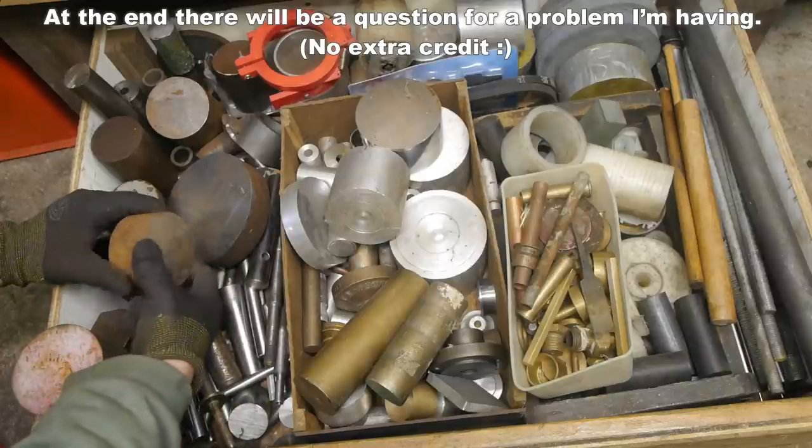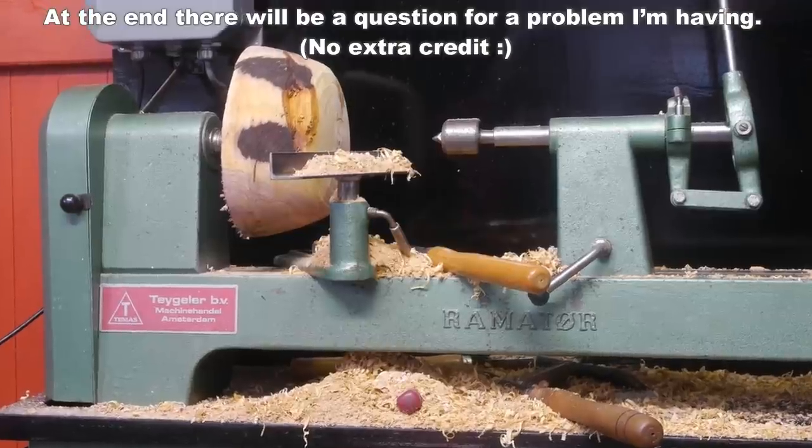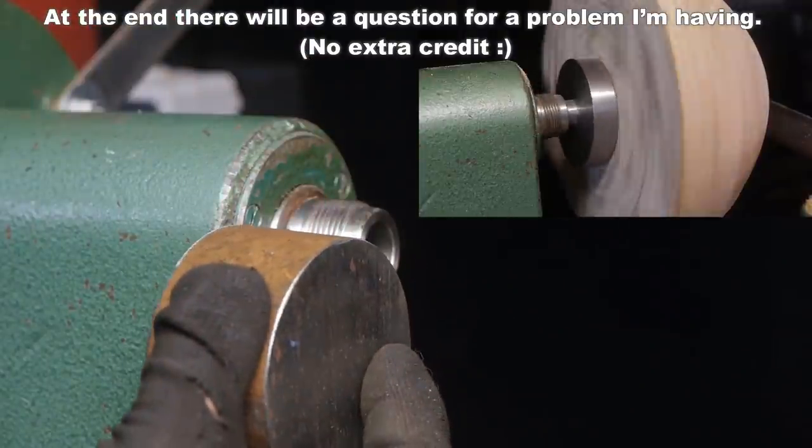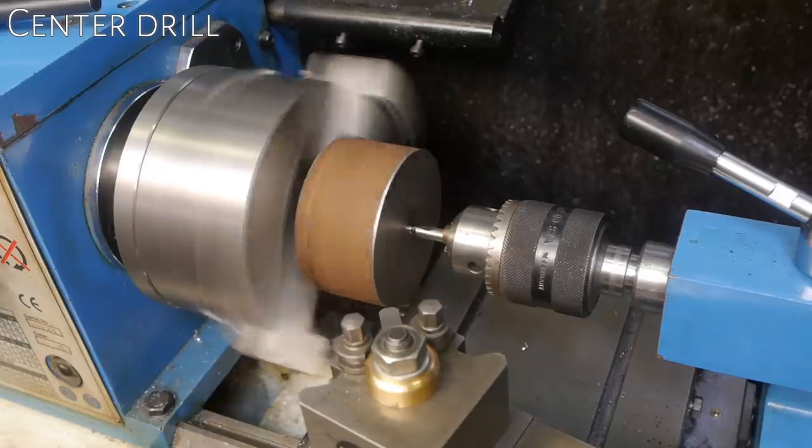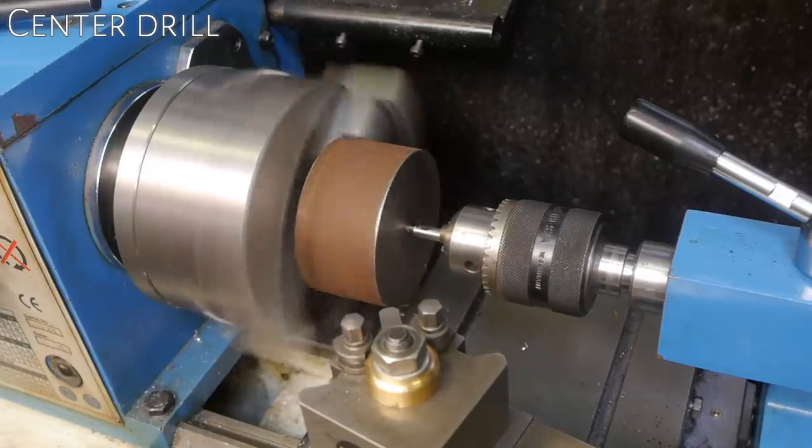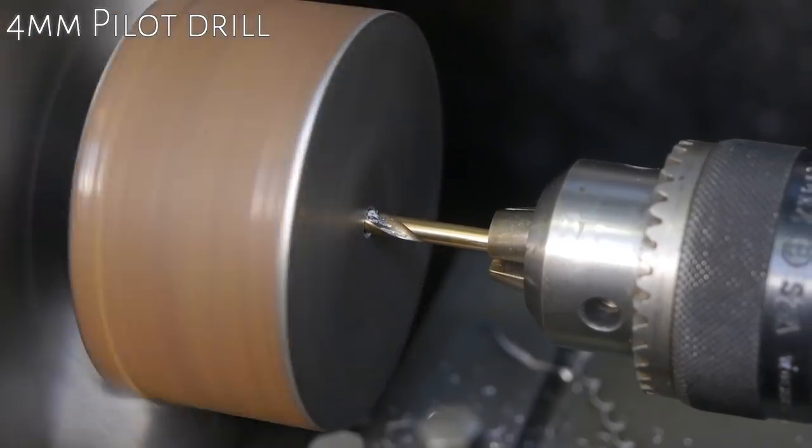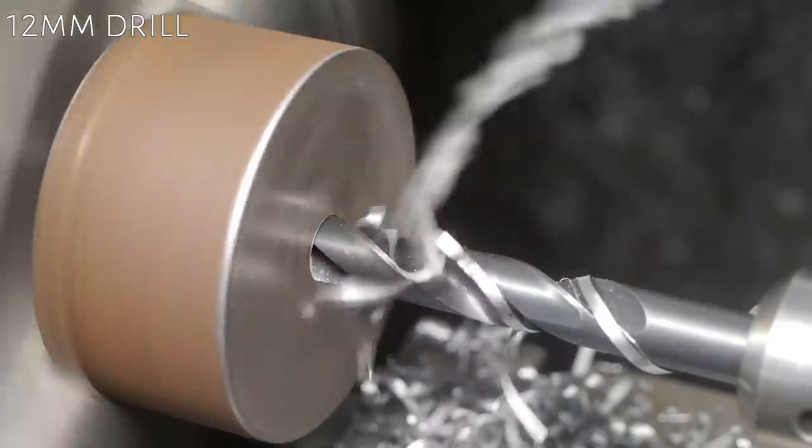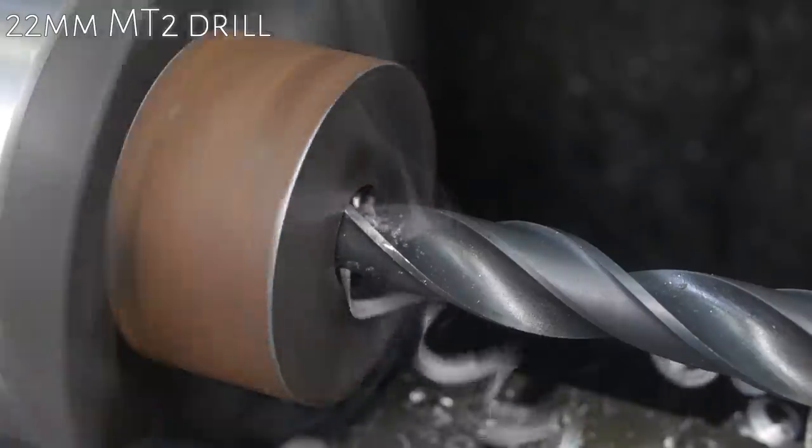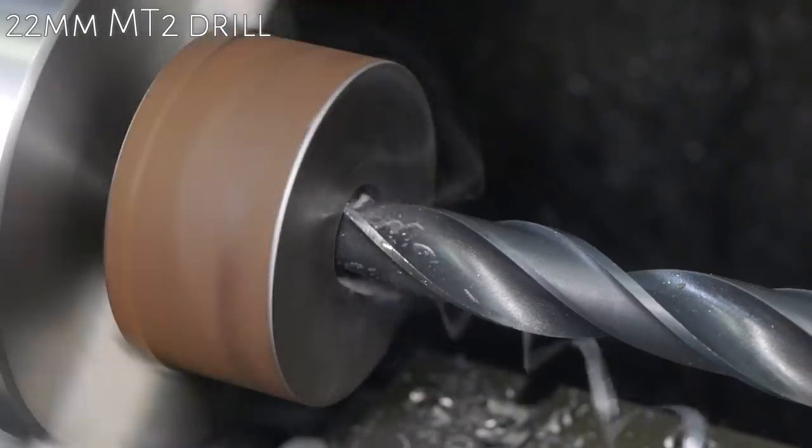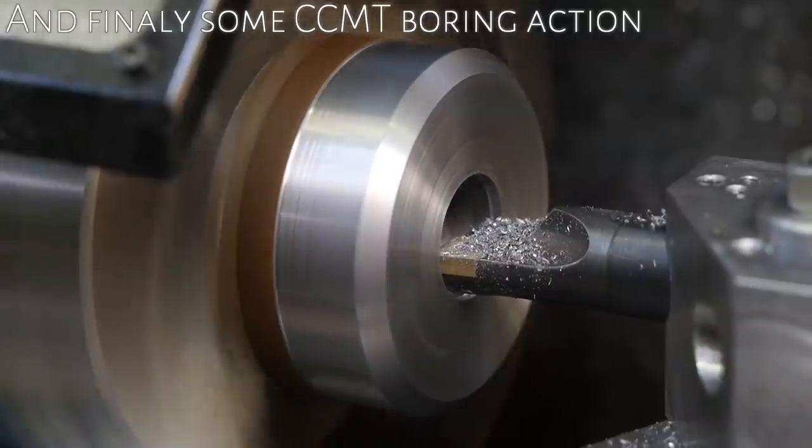In a previous video I started making a screw-on wood screw chuck for my lathe to replace the one that got damaged when turning a plum tree bowl blank. So far I did some drilling and boring, basically making a hole in a lump of material. Now that you're all up to speed, let's continue.